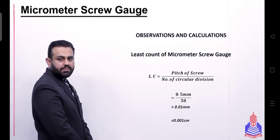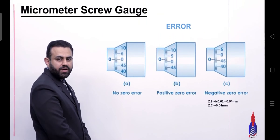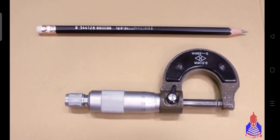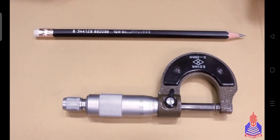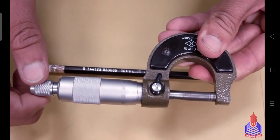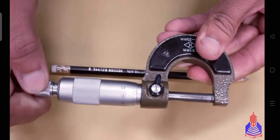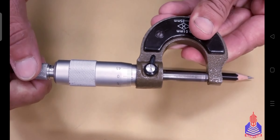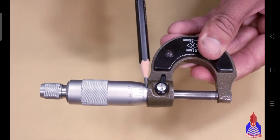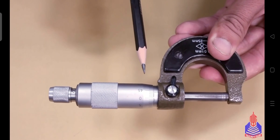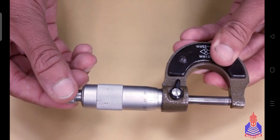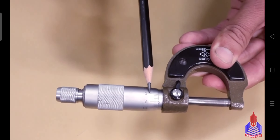After discussing the least count, we will talk about zero error and how to find it in the micrometer screw gauge. To find zero error, you rotate the circular scale until the two jaws are fully closed. Then you check whether the linear scale index line and the circular scale zero are aligned. If the circular scale and index line are aligned, then there is no zero error.